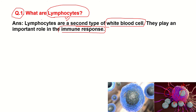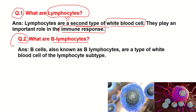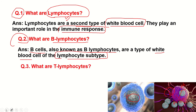Now, B lymphocytes — also known as B cells. B cells are a type of white blood cell of the lymphocyte subtype. You can quickly remember this; you can make a flashcard to help you remember for your final exam.